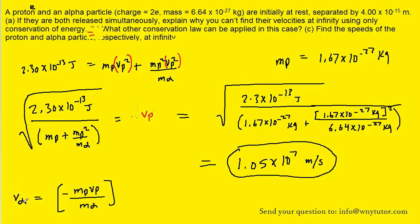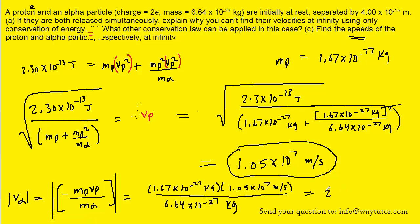The velocity of the alpha particle is given by the expression we derived. There is a negative sign, but since the question asks for speed — which is always positive — we take the absolute value. Plugging in the mass of the proton, the speed of the proton just found, and the mass of the alpha particle, you should get about 2.64 times 10 to the sixth meters per second — the speed of the alpha particle.